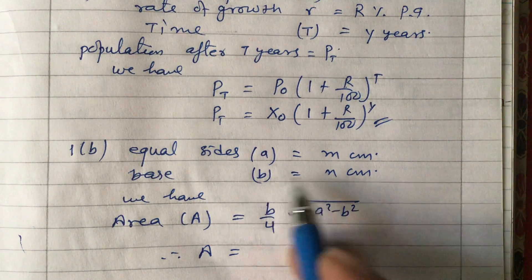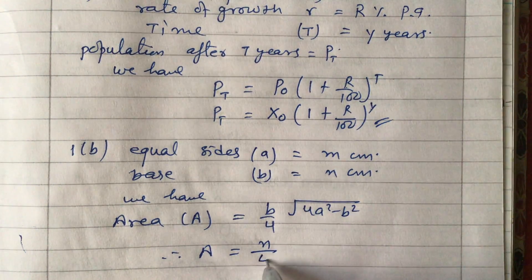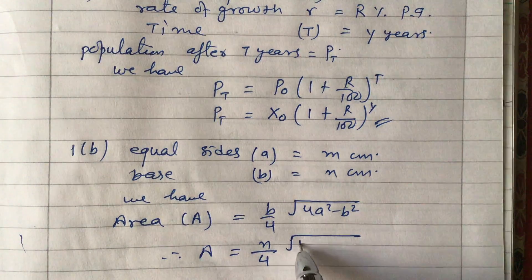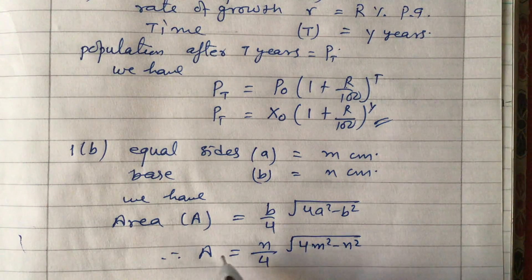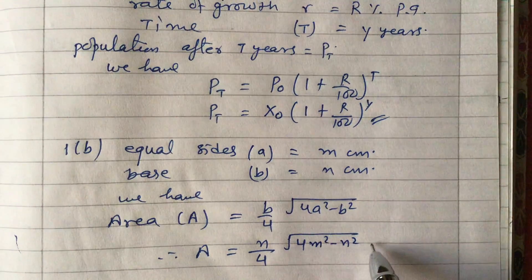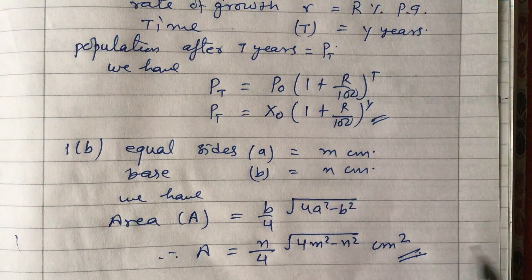Now we substitute the values: A = (n/4)√(4m² - n²). Since it is area, the unit is cm². This is our answer.